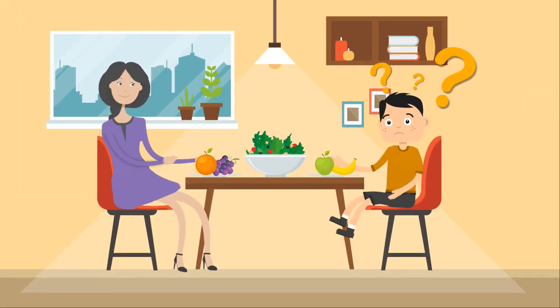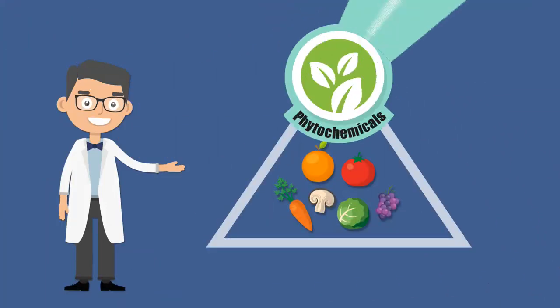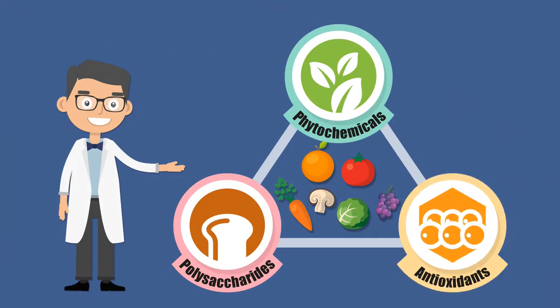What are plant compounds? Plant compounds consist of vital chemicals, polysaccharides, and antioxidants.